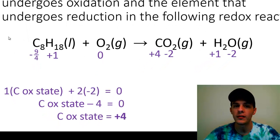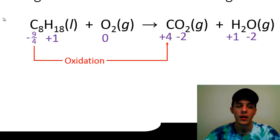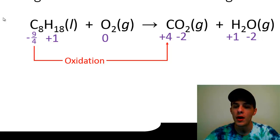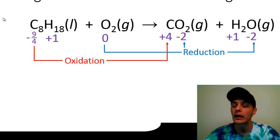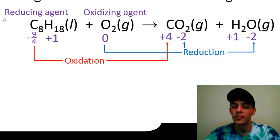Now we can figure out which element increases its oxidation state and becomes oxidized, and which decreases and becomes reduced. Carbon goes from −9/4 to +4 — that's definitely oxidation because it's going from small to large, so carbon is being oxidized. Hydrogen goes from +1 to +1, so it's not changing — hydrogen is neither undergoing oxidation nor reduction; its oxidation state is unchanged. Oxygen goes from zero to −2, just like the last example, so oxygen is undergoing reduction. Therefore, carbon is the reducing agent and oxygen is the oxidizing agent. Oxygen is a very common oxidizing agent — most of the time, oxygen will be your oxidizing agent.